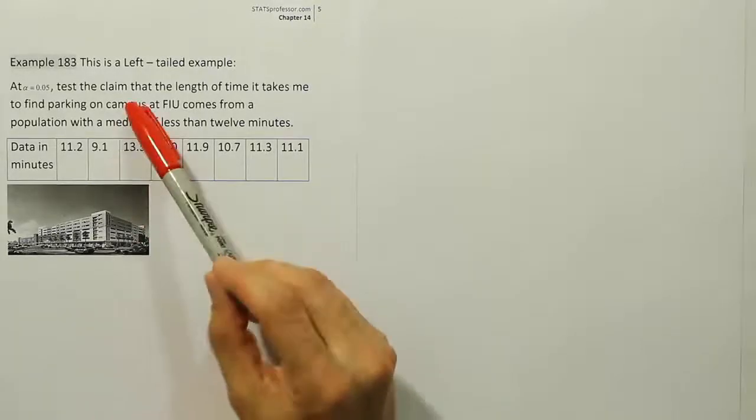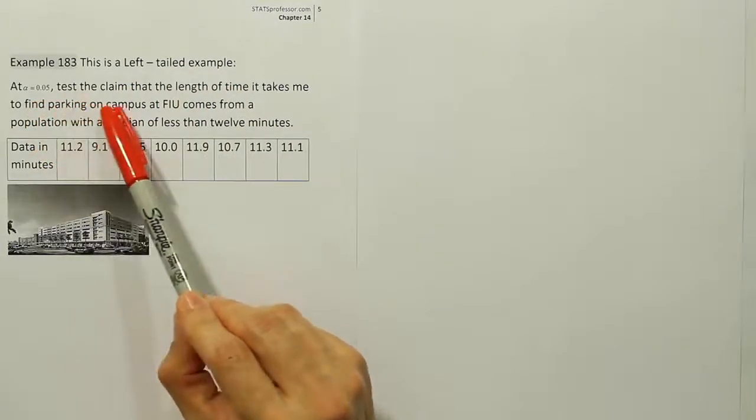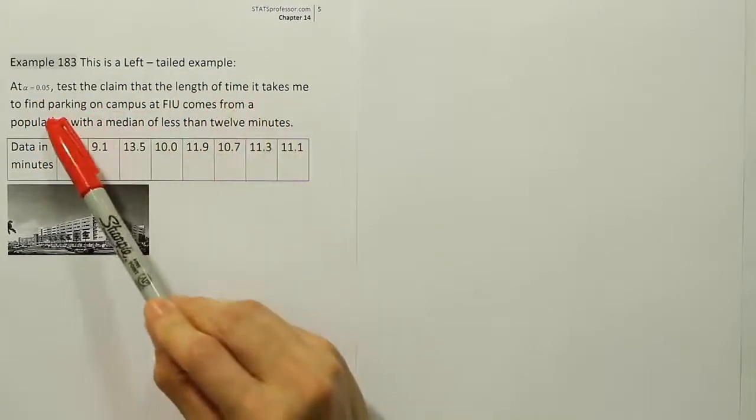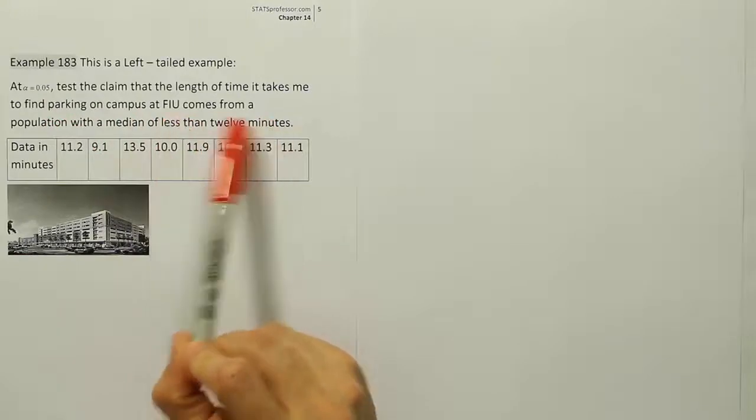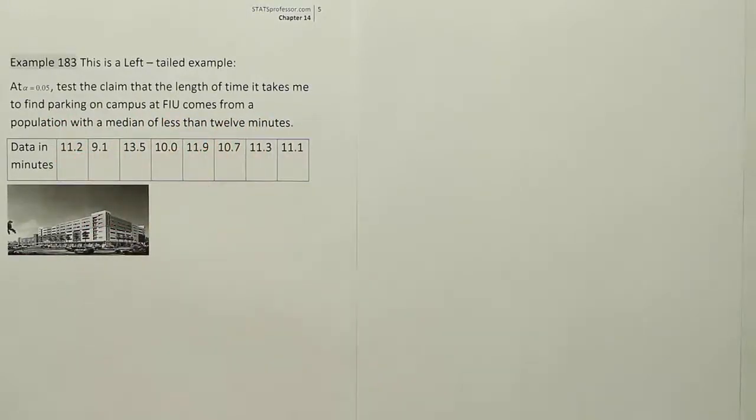Example 183. It says this is a left-tailed example. At the 5% level, test the claim that the length of time it takes me to find parking on campus at FIU comes from a population with a median of less than 12 minutes.